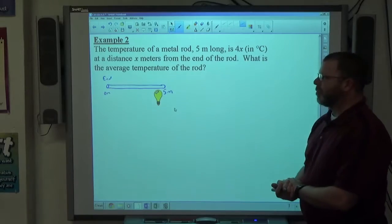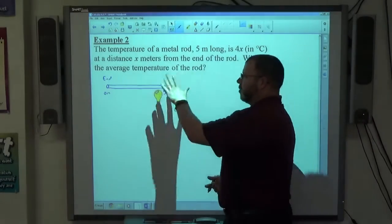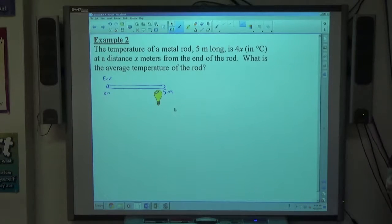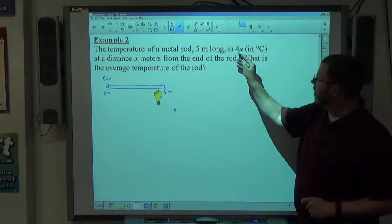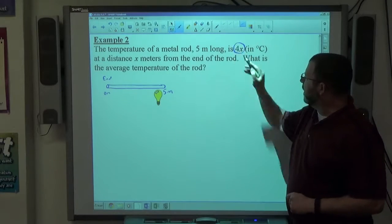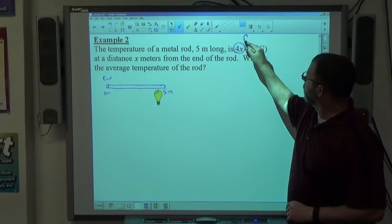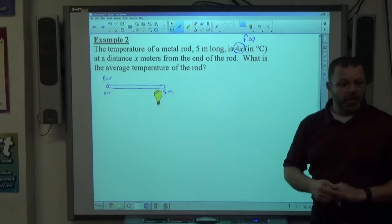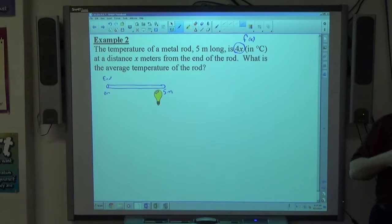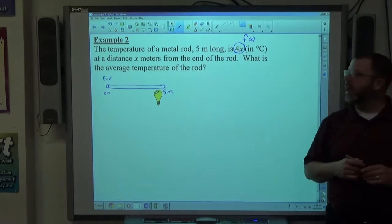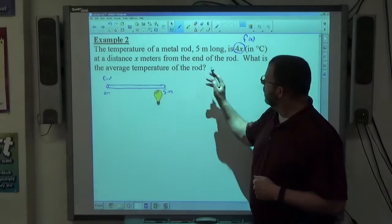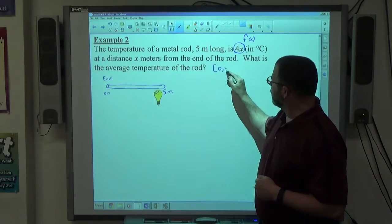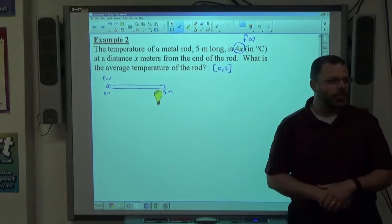So what they're asking us to do is find the average temperature of the rod. So, obviously, it's 20 degrees here and 0 degrees there, all right? And 4x is the equation, the f of x that we're looking for. That function represents the temperature of the rod at any position along the rod x. And we want the average temperature of the whole rod. The rod spans a distance of 5 meters, so it begins at 0, ends at 5, so we have intervals.